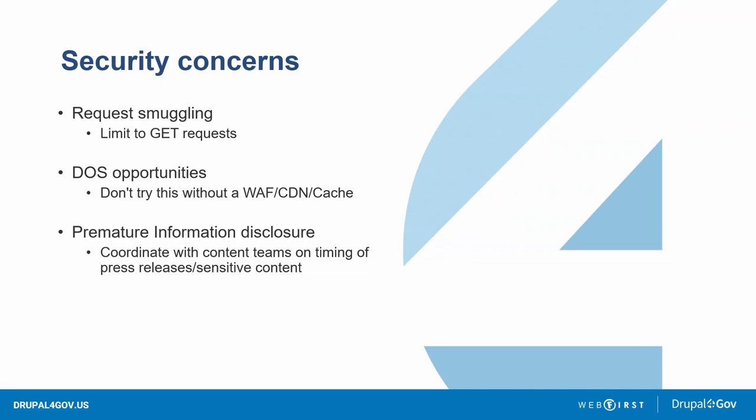There are also denial-of-service opportunities since you're adding extra work — making requests from the old site to the new site. Make sure you have a CDN and a web application firewall in front of it. And when you have more places to enter and manage information, there's a chance the content team could accidentally publish something at the wrong time — a press release, something about litigation — moving the markets. That's premature information disclosure as a security concern.